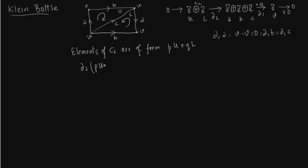Now we want to find what does delta 2, which acts on the elements of C2, what does it produce? Obviously delta 2 is a linear map. So P and Q come out. We have to find delta 2 U.